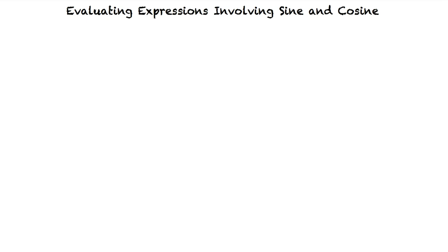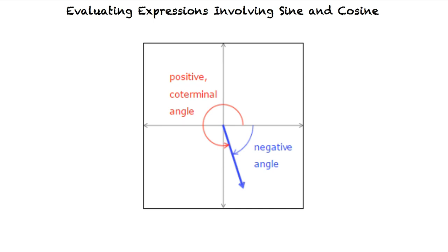We also need to remember that in standard position, a rotation counterclockwise gives a positive angle, and a rotation clockwise gives a negative angle. When finding sine and cosine values of a negative angle, we can use the positive coterminal angle.